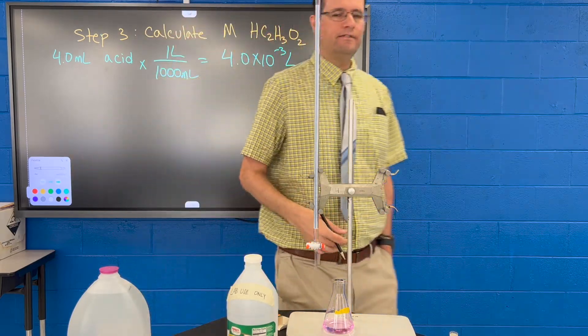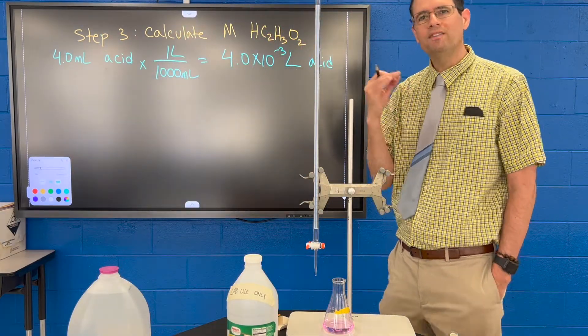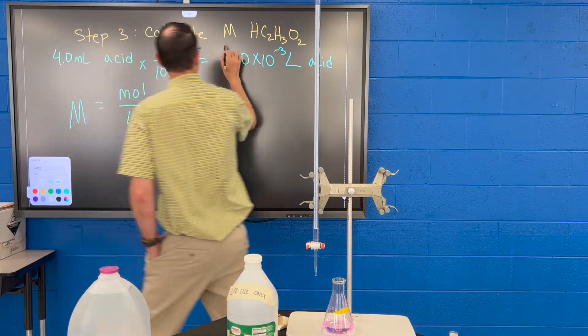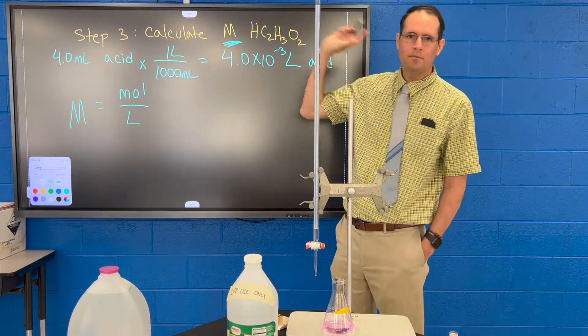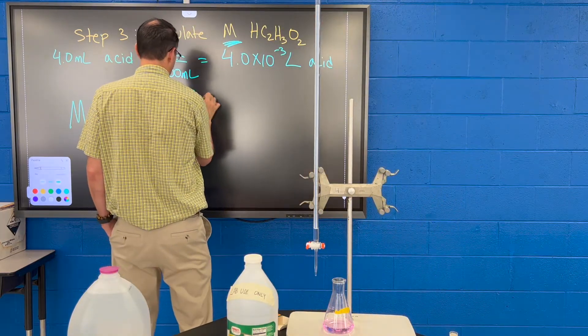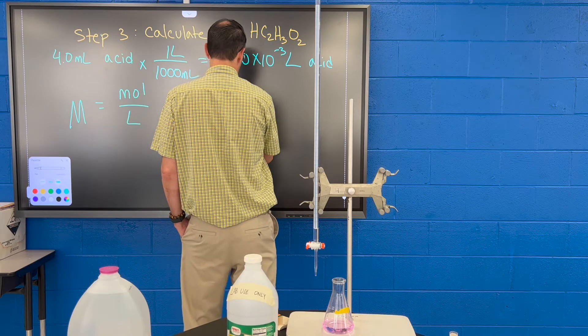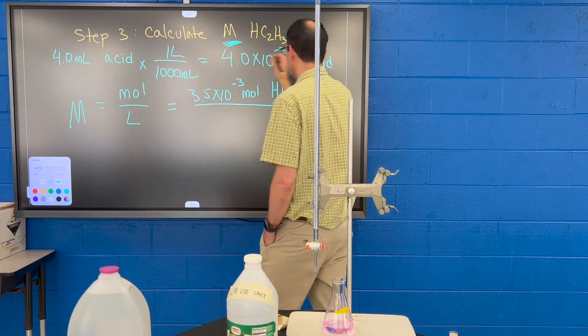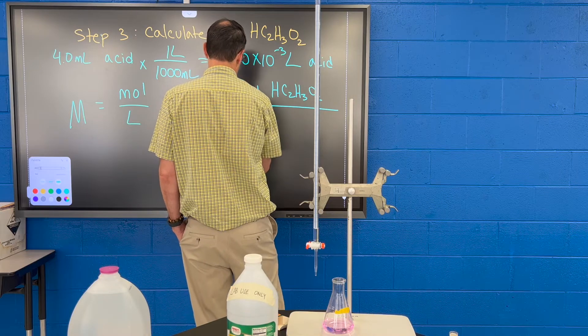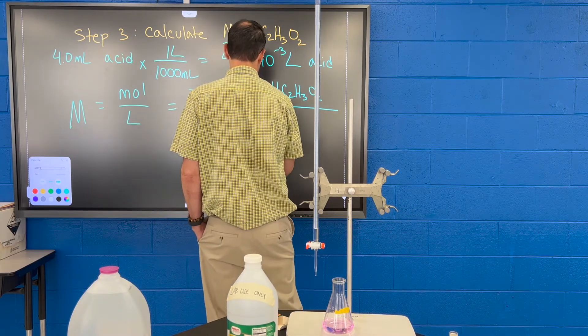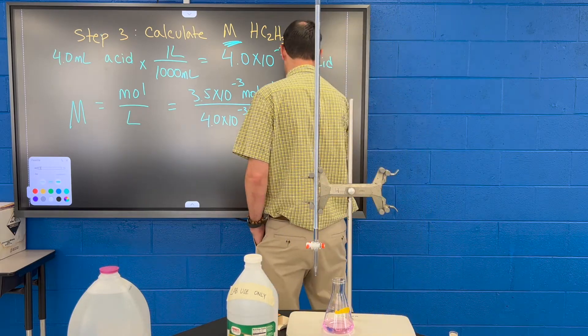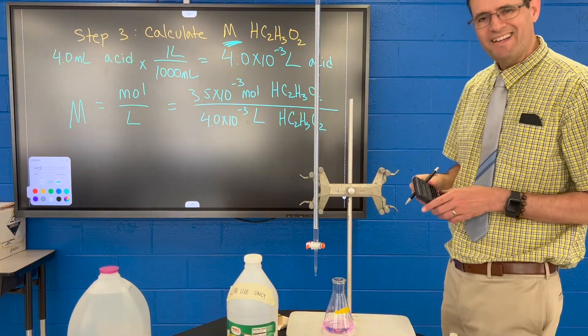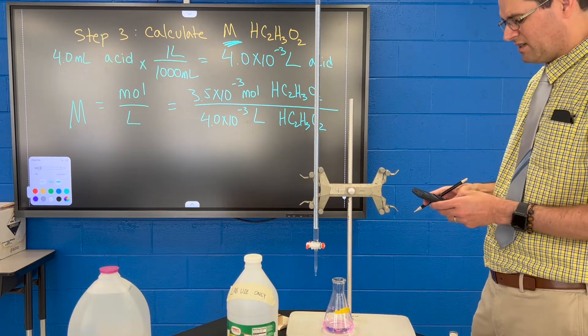And I'll just write acid here. Now we want to convert that to liters. Let me show you why. What we want to do is plug this into the molarity formula. Molarity is equal to moles divided by liters, and that's what we're trying to calculate, right? So we just calculated the molarity on the previous slide - it's 3.5 times 10 to the minus 3 moles of acetic acid, divided by this number here, and that's liters of acid. I'm just going to write - well, I should rewrite the formula. Nothing cancels there, it's moles per liters, and the abbreviation for that is capital M. So let's calculate this on our calculator.